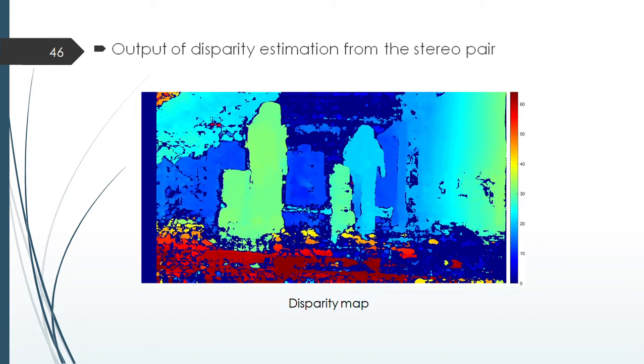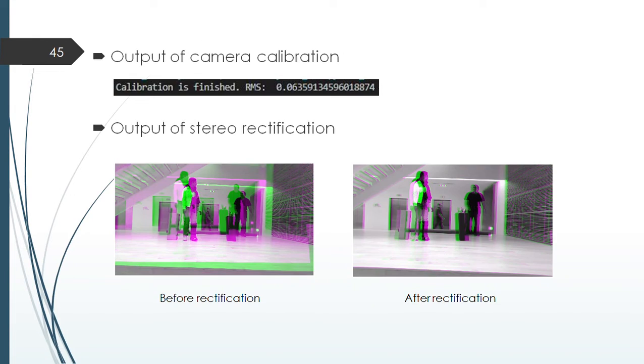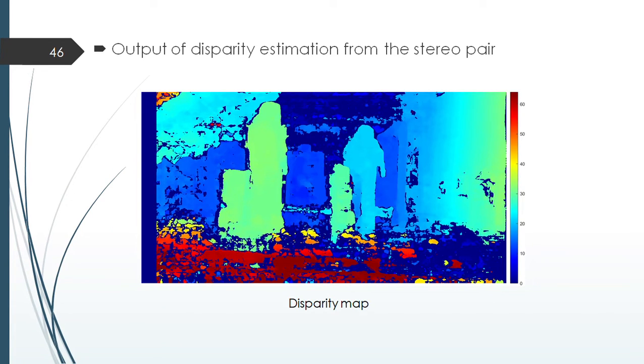This is the output of the disparity estimation from the stereo pair. On the left hand side, you can see that the lady was in front of the gentleman and the color in the lady is lighter as compared to color of the gentleman. On the right hand side, you can see a scale of the disparity estimation. The objects nearer to the camera are lighter in color and objects far away from the camera are blue in color.